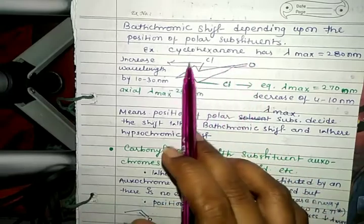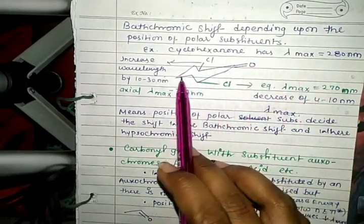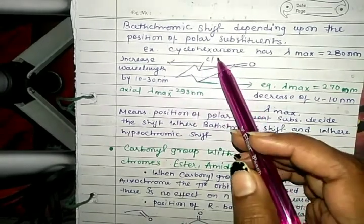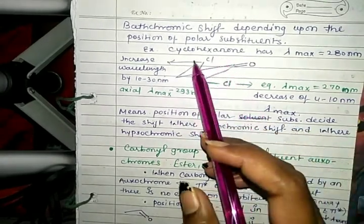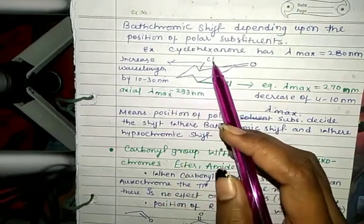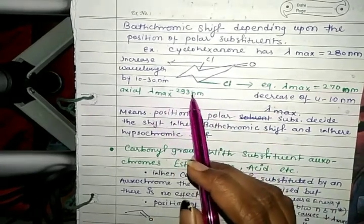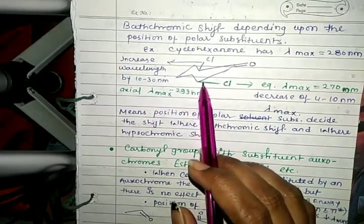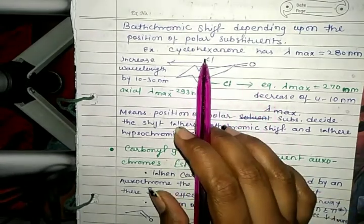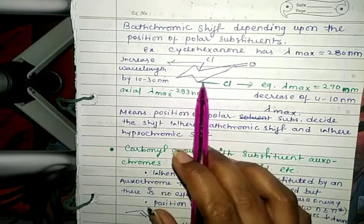For example, cyclohexanone has lambda max of 218 nanometers. When chlorine acts as a polar substituent at the axial position, lambda max is 293 nanometers. When we change the position of chlorine from axial to equatorial position...